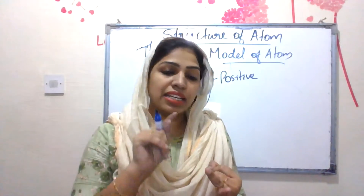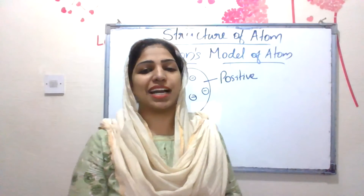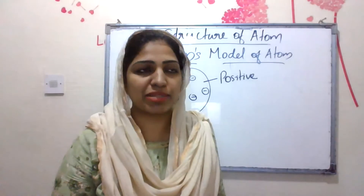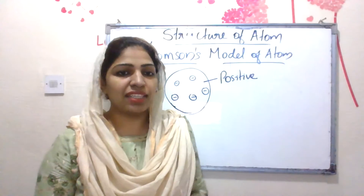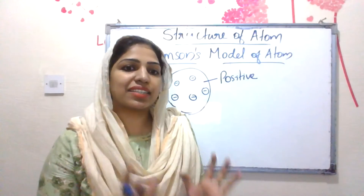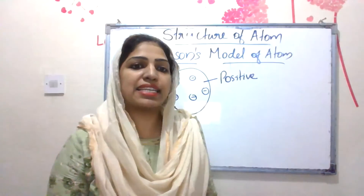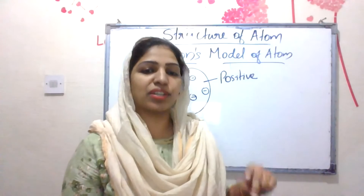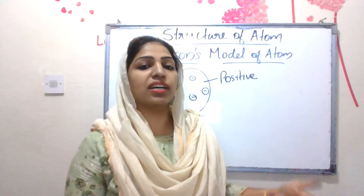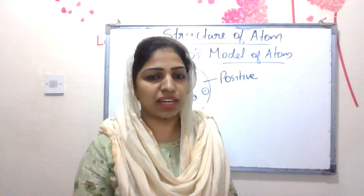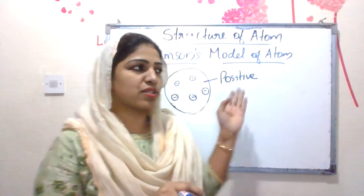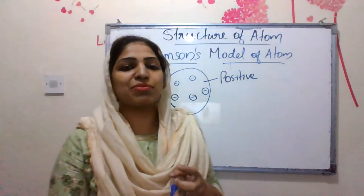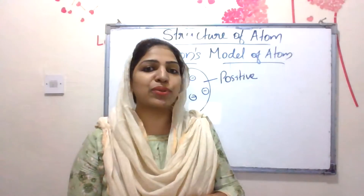What is the success of Thomson's Model of Atom? He could explain the electrical neutrality of the atom. The atom is electrically neutral because it is a positive sphere with negatively charged electrons embedded inside it. As a whole, the atom is electrically neutral. That is the success of Thomson's model.